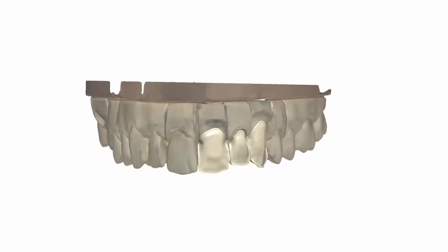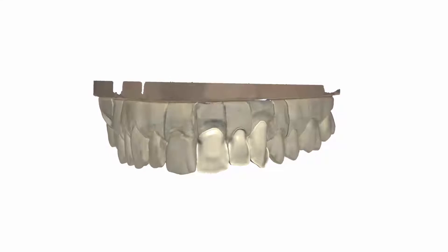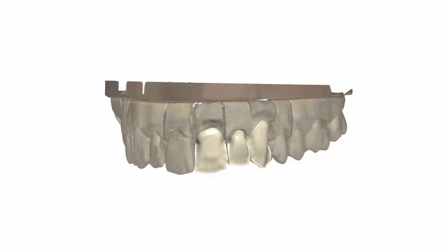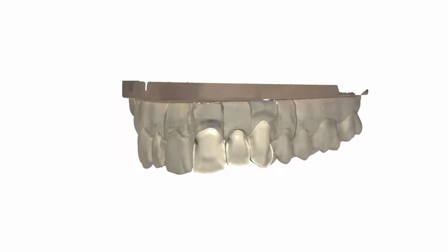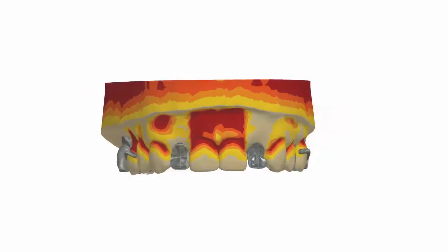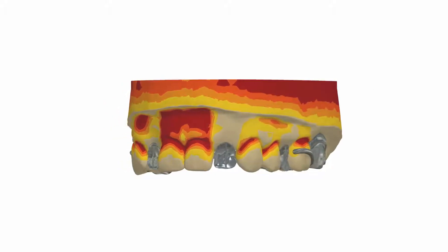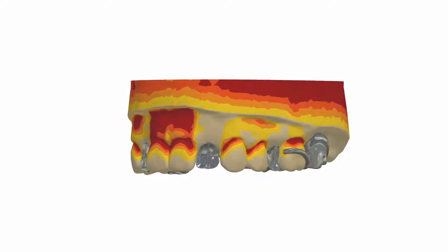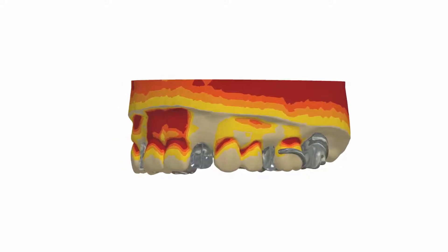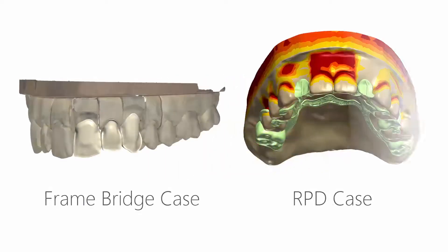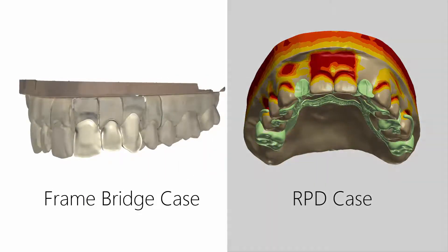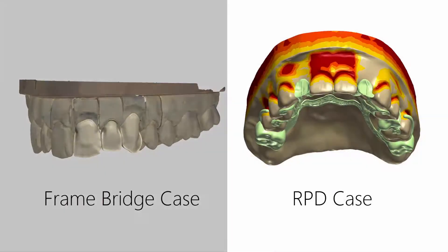This tool is mostly dedicated for cases in which you design frameworks that need hand veneering on the facial side, when aesthetics are the priority, or when you do complex work — for example, metal plus acrylic material. We will demonstrate the use of this tool on two cases: first is a three-unit frame bridge, and second is an RPD design.